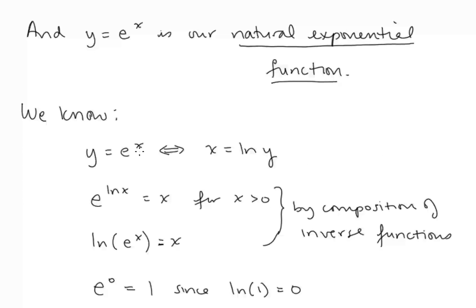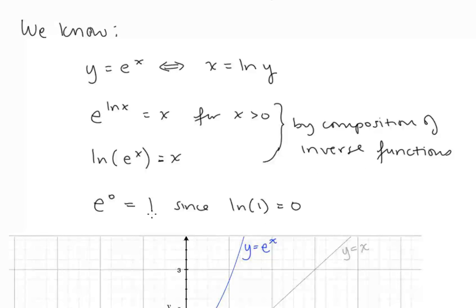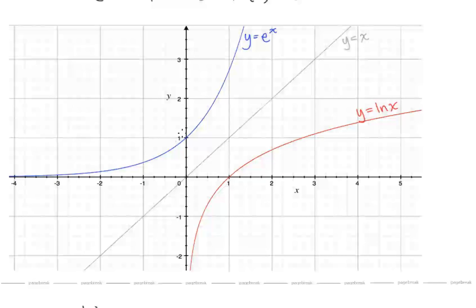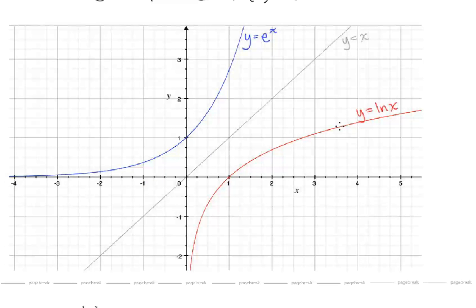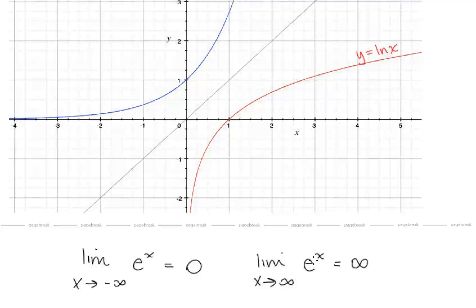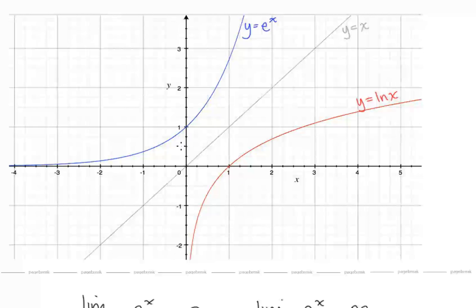We know that y equals e to the x is the same as saying x equals ln y. We know that e to the ln x equals x for positive x, and that ln of e to the x equals x — these two follow from composition of inverse functions. We also know that e to the 0 equals 1 since ln of 1 equals 0. That gives us the graph of e to the x, and we can also see the graph of y equals ln x, the inverse function. The limit as x goes to negative infinity of e to the x equals 0, and the limit as x goes to positive infinity of e to the x equals infinity.